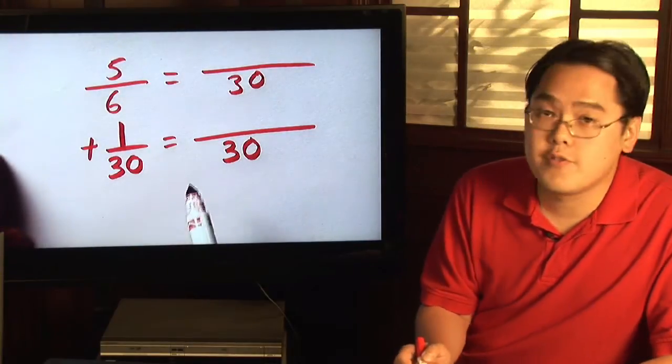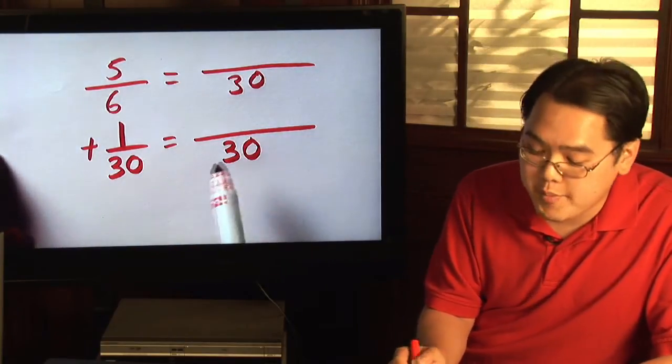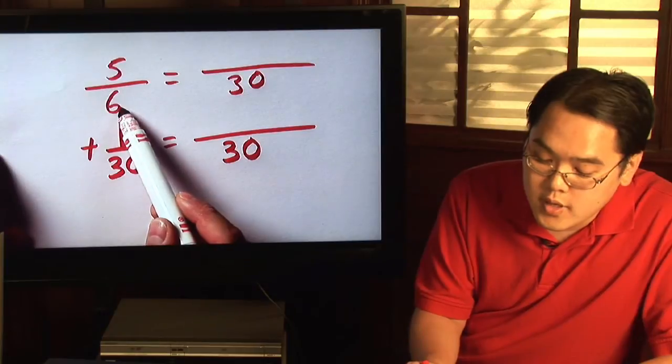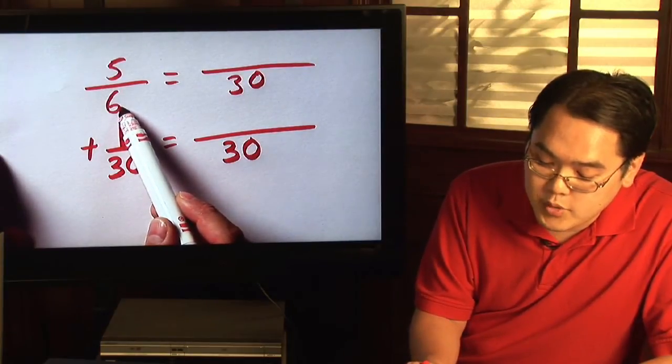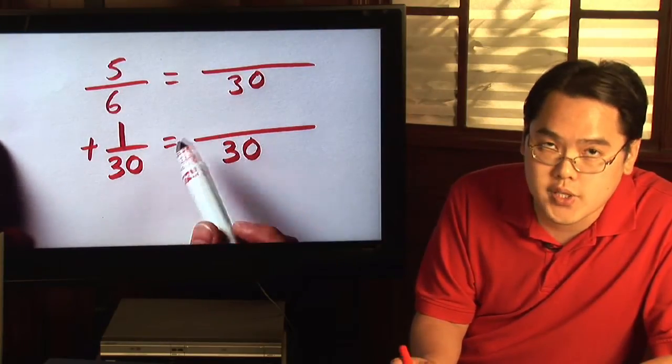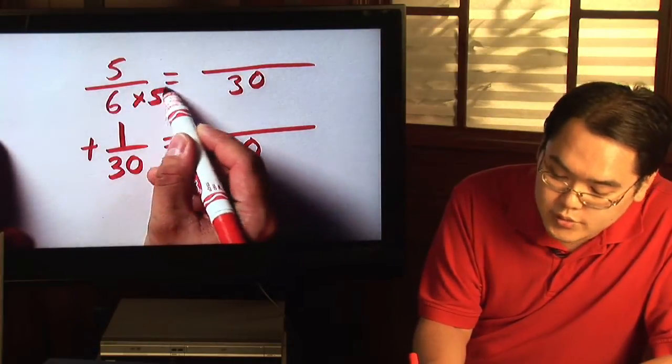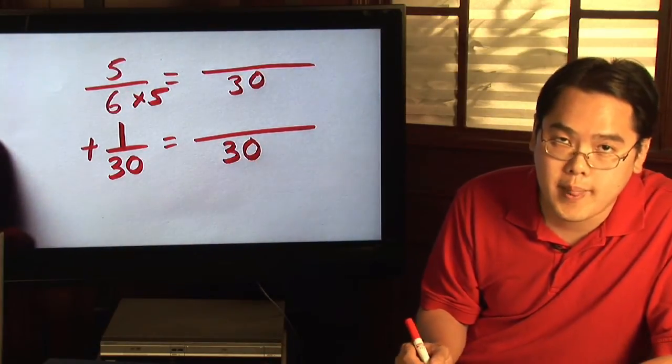Now, after you've found the LCD or least common denominator, you have to ask yourself, for example, with six, six times what number is thirty? Well, if you know your multiplication tables, you'll know that six times five gives you thirty.